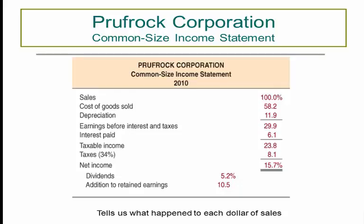Looking at the standardized or common size income statement, we can finally see what happens to each dollar of sales. You start at 100% of sales. You'll see that 58% is lost to cost of goods sold, another almost 12% is taken out for depreciation, and you lose around 6% for interest paid. You paid out about 8% in taxes of the 24% left—which is your taxable income—and your net income is only 15.7% of your total sales.